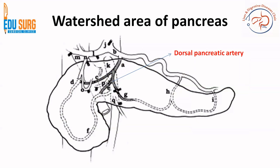After understanding this entire concept, note that the only branch providing a communication or anastomosis between the blood supply of the right pancreas and the left pancreas is the dorsal pancreatic artery. If this artery is divided, there is no way for the blood supply of the two parts to intermingle. That is why this region becomes the watershed area of the pancreas — the zone between the right and left pancreas where the only communicating vessel is the right transverse branch of the dorsal pancreatic artery.